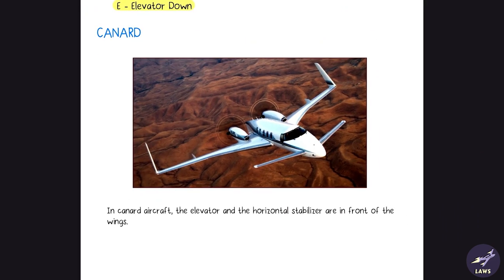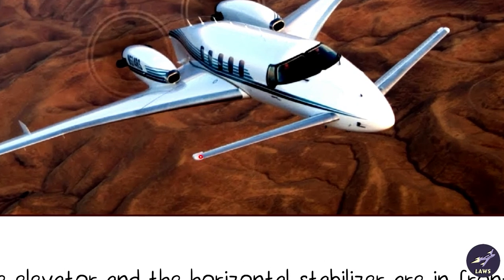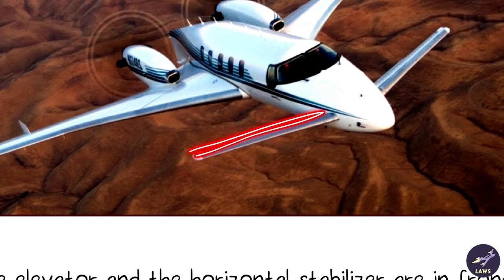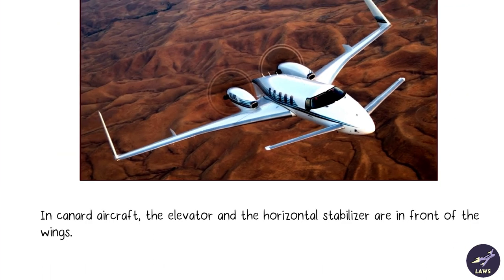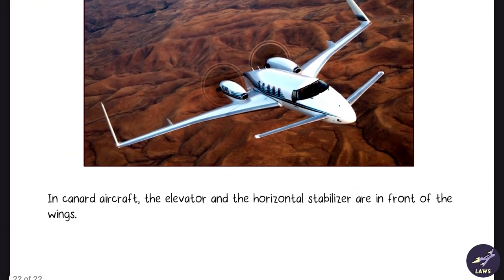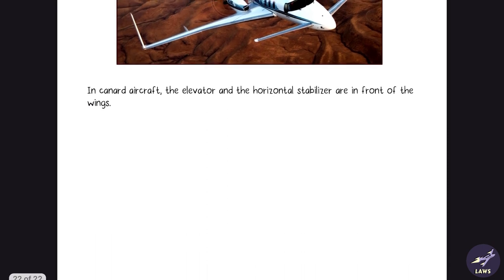Finally, canard aircraft: in a canard design, the elevator and horizontal stabilizer are positioned in front of the wings rather than behind. Good to know for the exam. That concludes this chapter — hope you enjoyed the video, give it a thumbs up, subscribe, and share it with your friends.